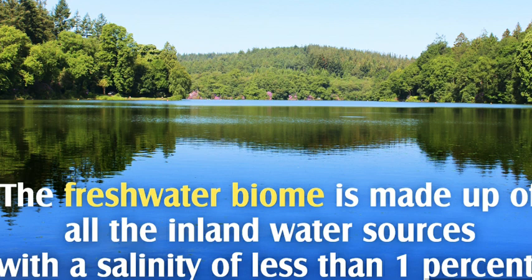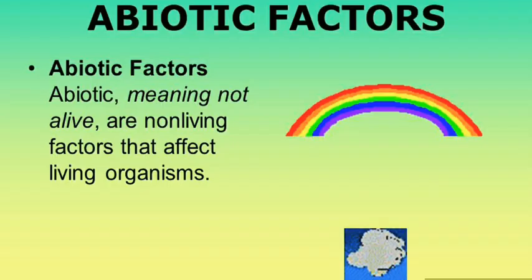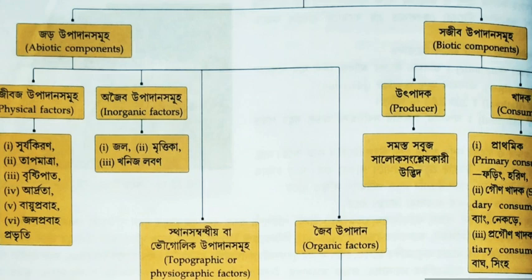The second topic is environmental factors. Environmental factors are divided into two major parts: first, the abiotic components, and second, the biotic components. The abiotic components are further divided into four parts: physical factors, inorganic factors, topographic or physiographic factors, and organic factors.